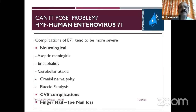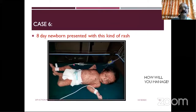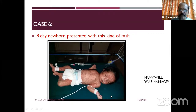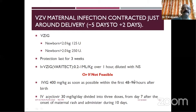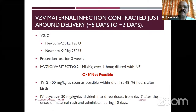When Enterovirus 71 is the cause, manage accordingly. An eight-day-old neonate presenting with a diffuse chickenpox-like rash — at eight days old, you have to think about maternal infection. This patient should be treated with varicella-zoster immunoglobulin: if less than 2 kg, use 125 units; if more than 2 kg, use higher doses. The protection lasts for three weeks.